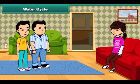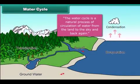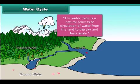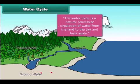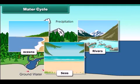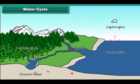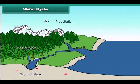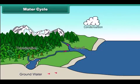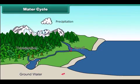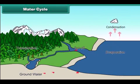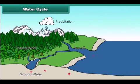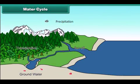Sister, yesterday you also told me about the water cycle. Please tell us more about it. Okay, the water cycle is a natural process of circulation of water from the land to the sky and back to the land. Water in water bodies like rivers, seas and oceans gets heated up by the sun and forms water vapors. This water vapour rises up in the air, gets cool and turns into cloud and finally into rains. Then, after raining, land water goes to lakes and rivers which then flow back to the seas or oceans and the cycle completes. This cycle gets repeated again and again.